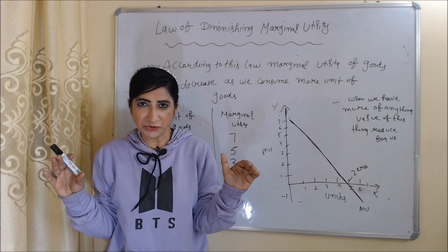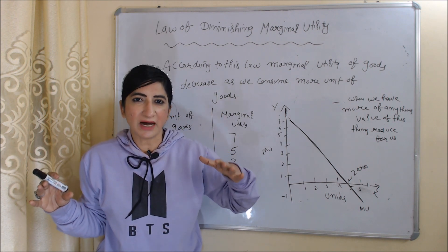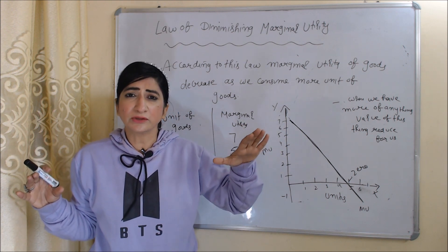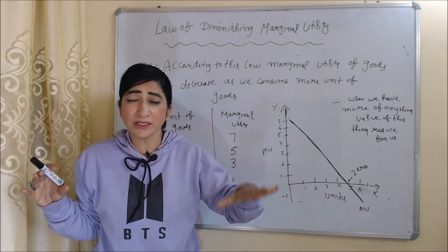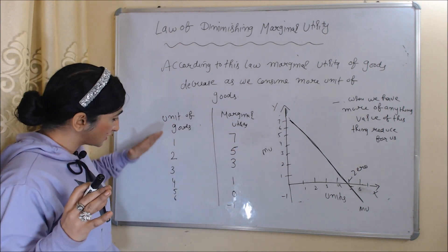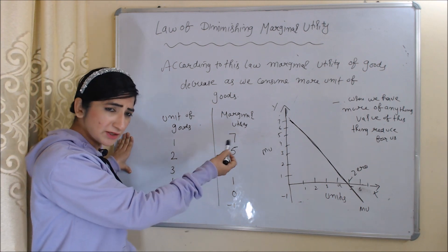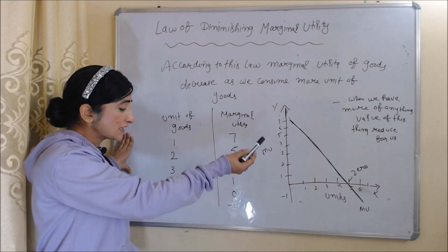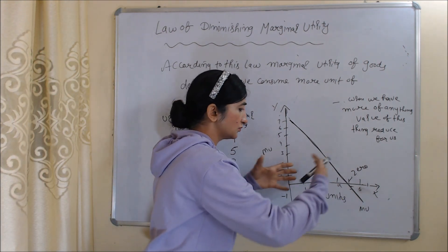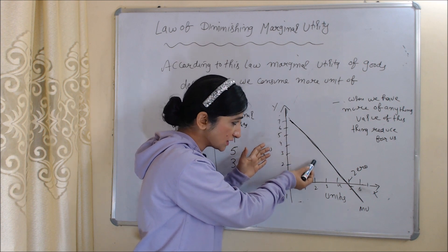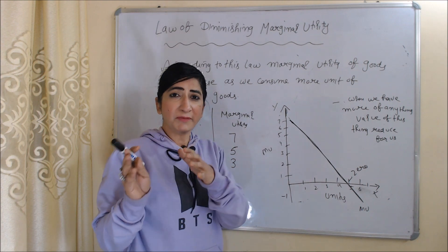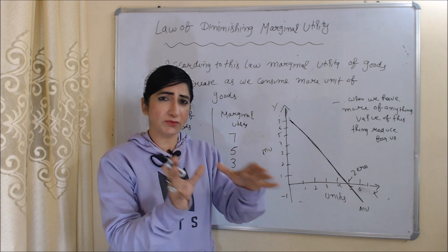Now we are going to talk about the law of diminishing marginal utility. According to this law, our marginal utility decreases as we consume more units of a product. In the table you can see, as we consume more and more units, marginal utility reduces — 7, 5, 3, 1 — then becomes 0, and finally becomes negative 1. In the diagram, at 5 units it becomes 0 and at 6 units it becomes negative 1.